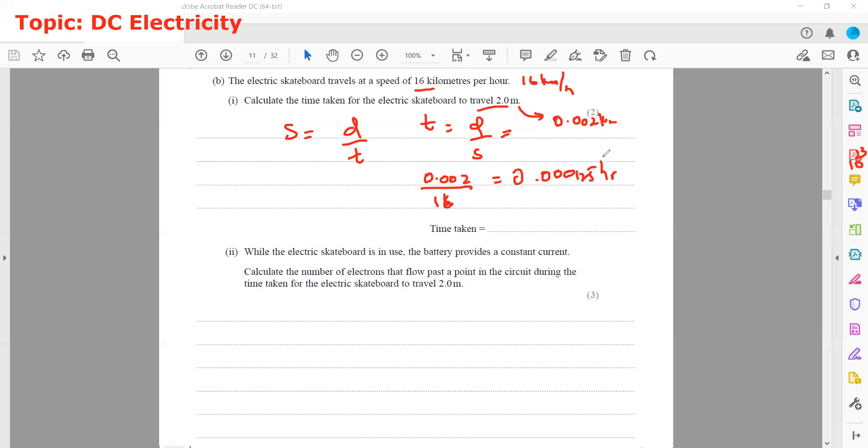We can convert to minutes by multiplying by 60, then multiply by 60 again to convert to seconds. So it is about 0.45 seconds. We multiply by 3600 to convert hours into seconds.